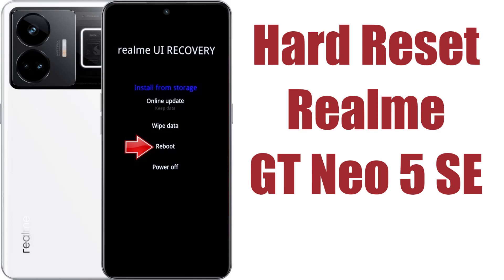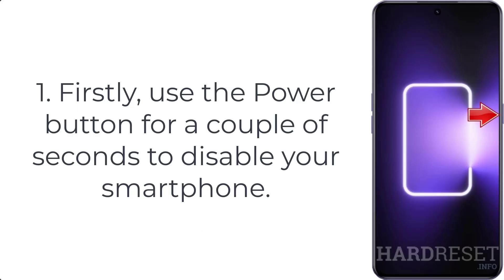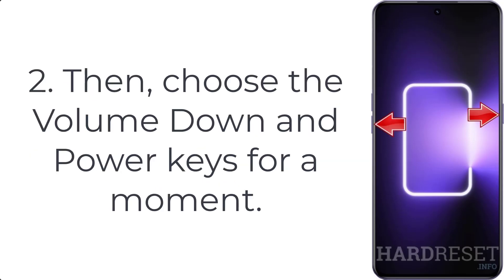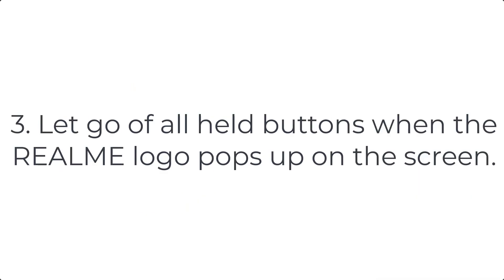How to hard reset Realme GT Neo5 SE. Step 1: firstly use the power button for a couple of seconds to disable your smartphone. Step 2: then press and hold the volume down and power keys for a moment. Step 3: let go of all held buttons when the Realme logo pops up on the screen.